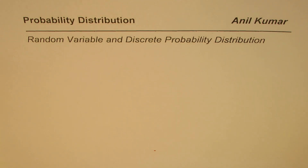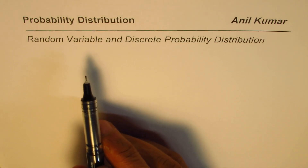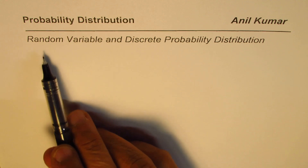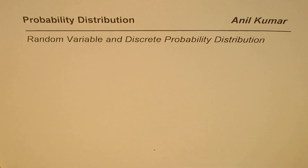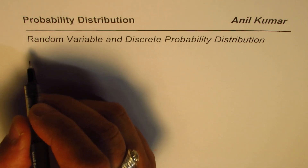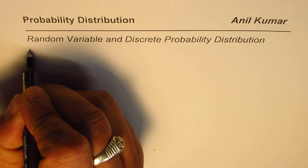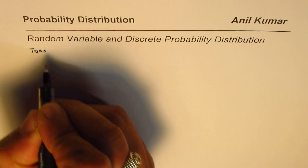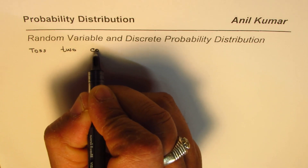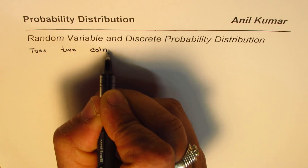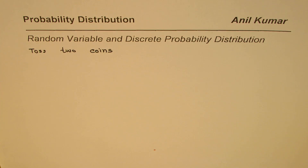I'm Anil Kumar and in this video we'll try to understand the terms random variable and discrete probability distribution. Let us begin with a simple example — we toss two coins. When you toss two coins, what are the outcomes?